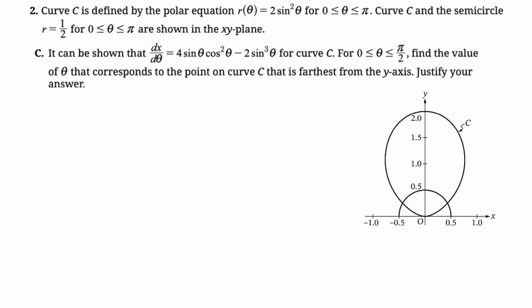It can be shown that dx/dθ is four sine of theta cosine squared of theta minus two sine cubed of theta. Okay, so that's where X is equal to R times cosine of theta. If you're not sure where that's coming from, and then you take the derivative, it's kind of messy between zero and pi over two. We want to find the value of theta that corresponds to the point on the curve C that is farthest from the y-axis. So zero to pi over two is the first quadrant. So you can kind of like eyeball this. It's that point right there. That point is the farthest. So we're looking for where X just has an absolute maximum between zero and pi over two.